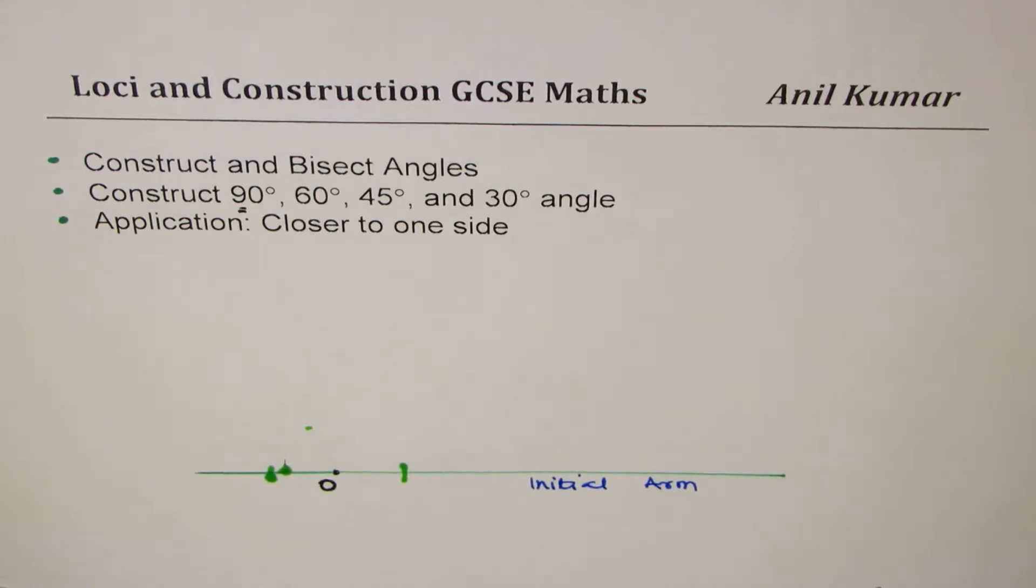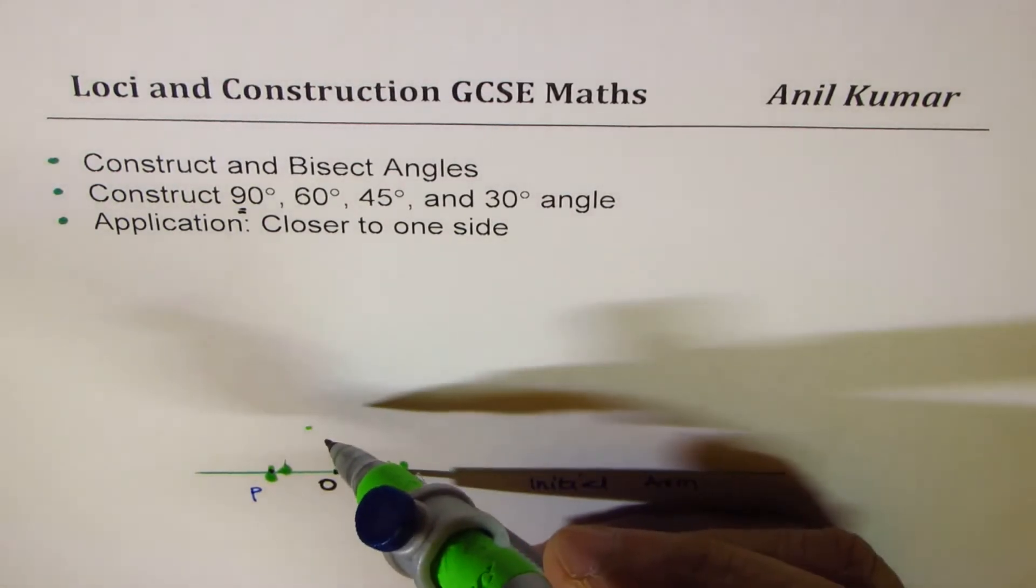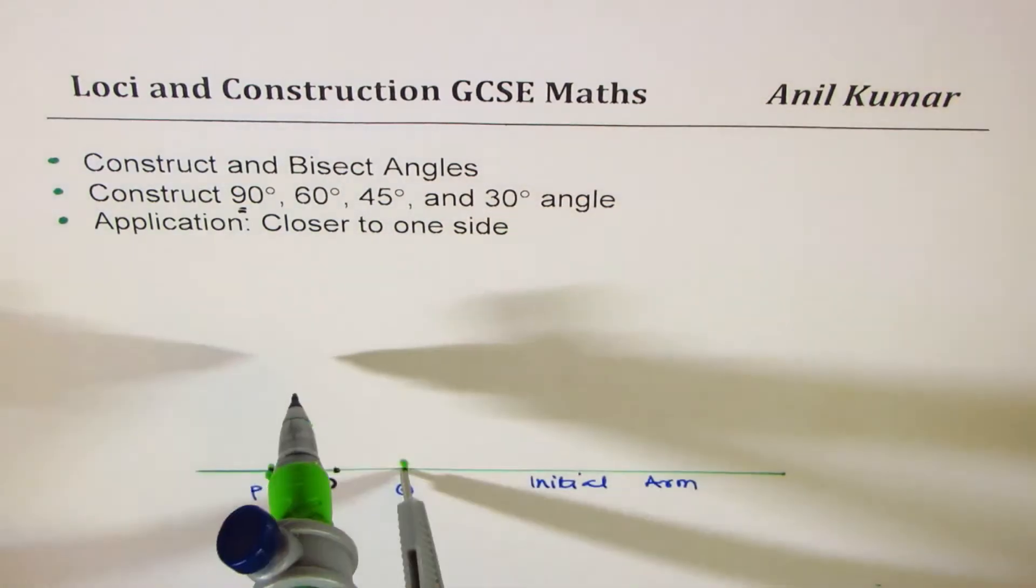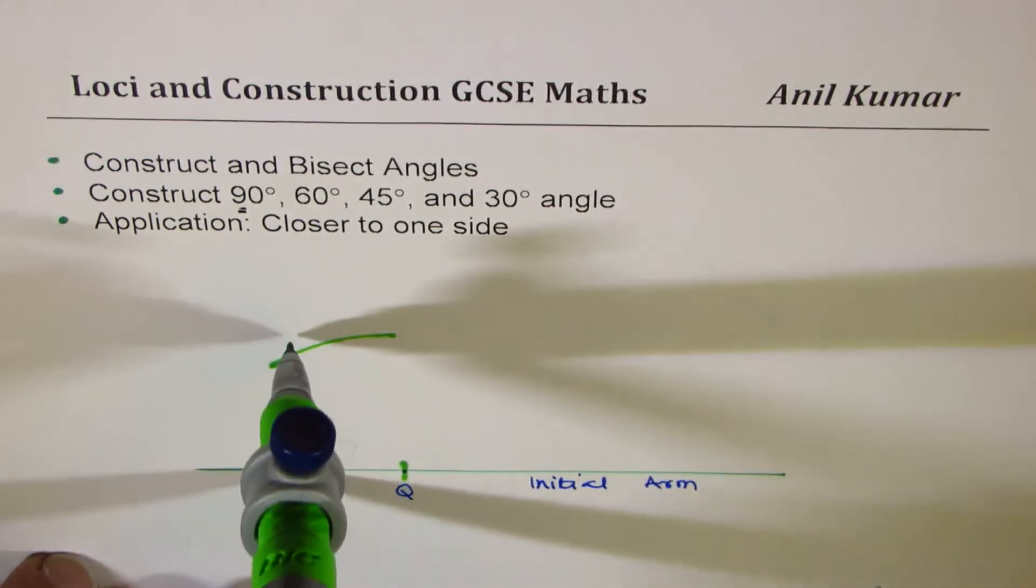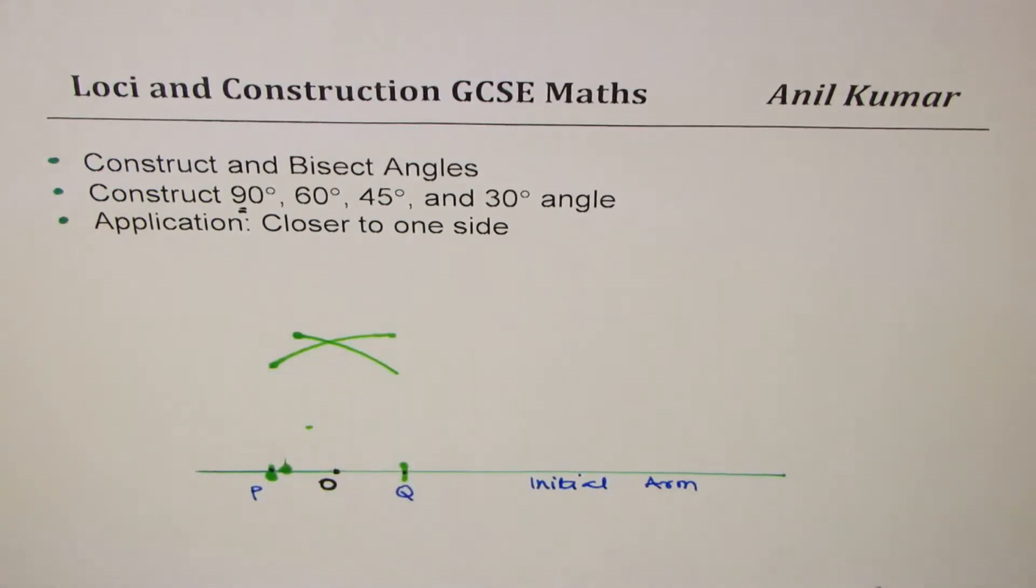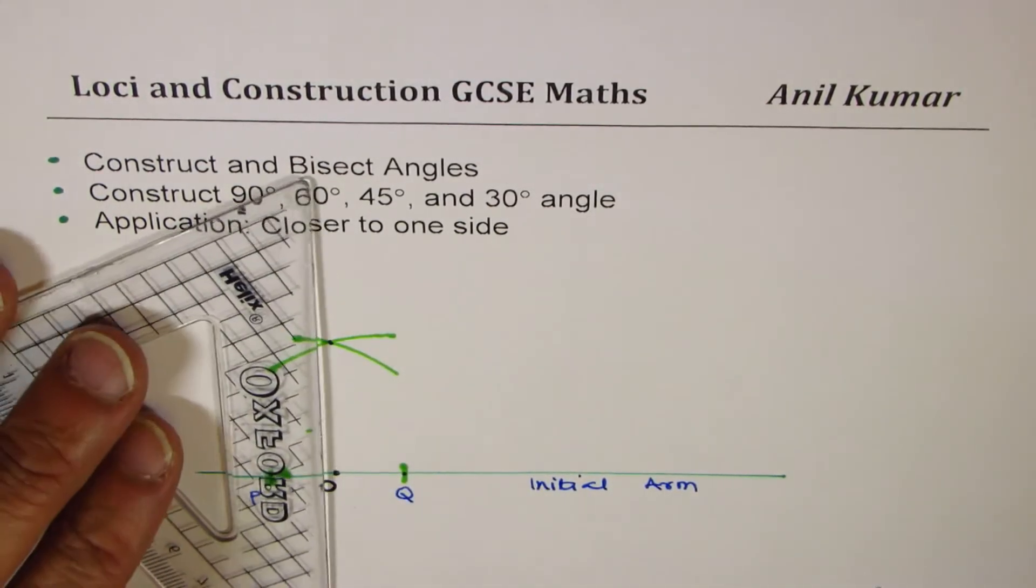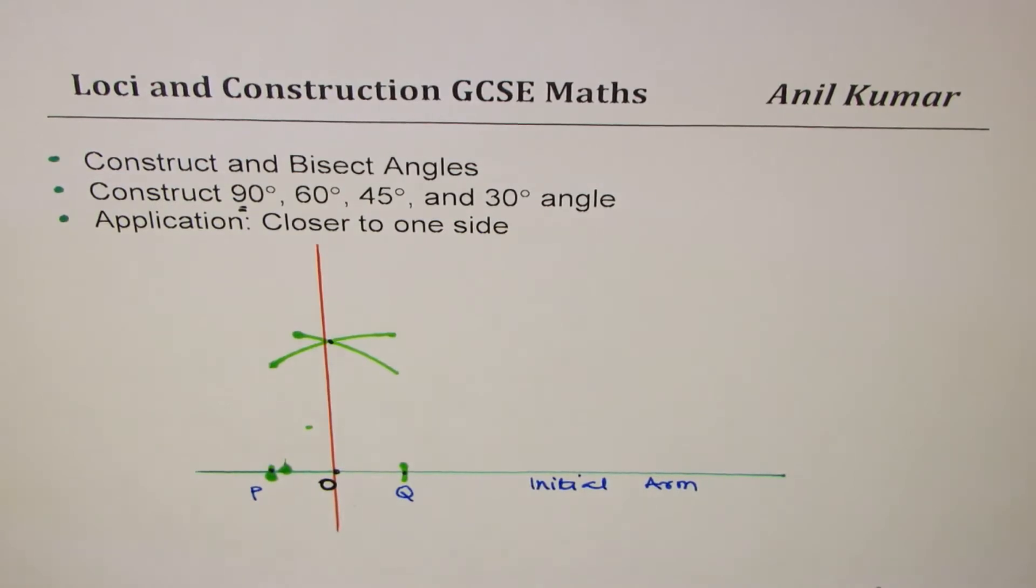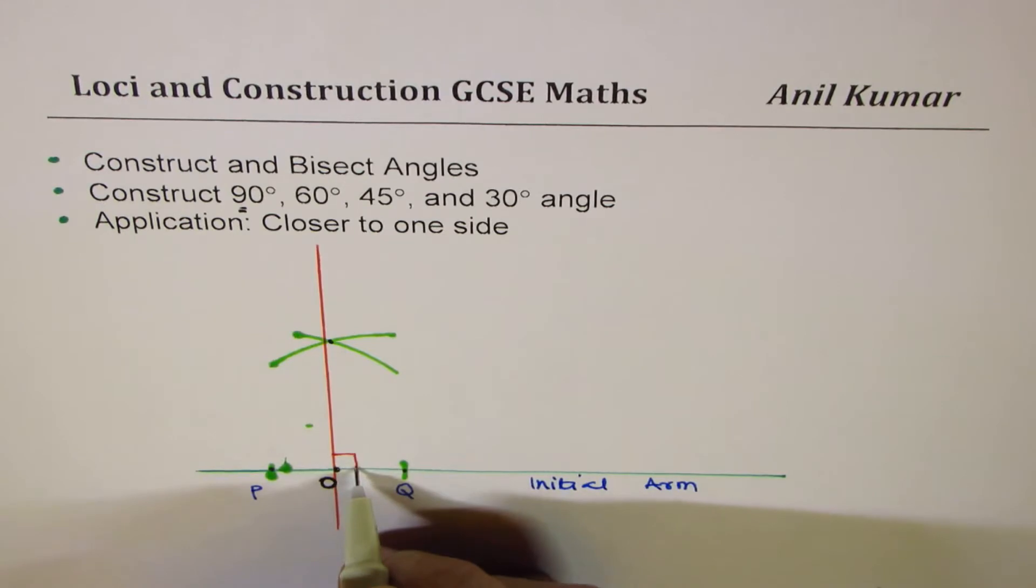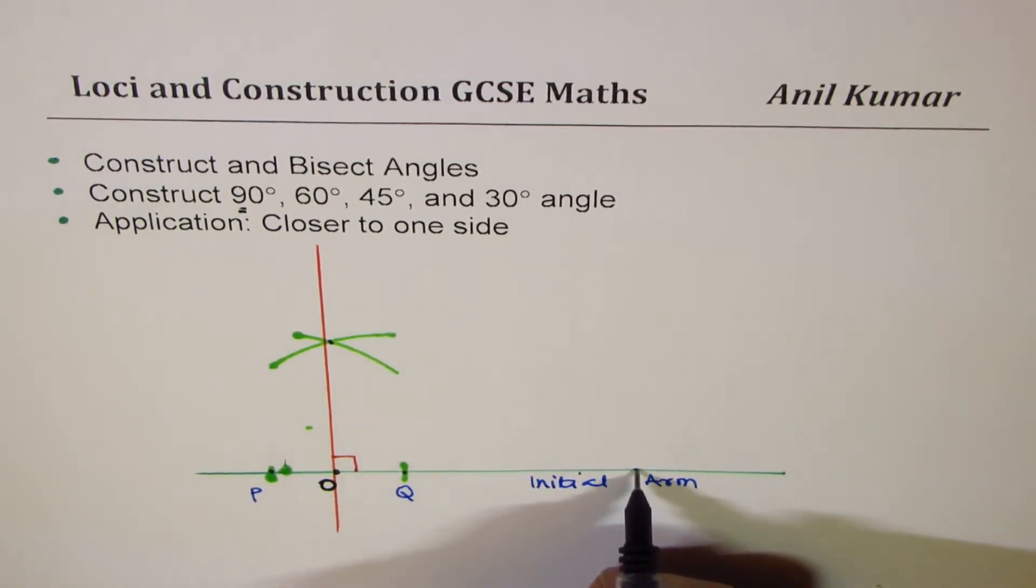We just mark it on the line, two points. The points are, let us say, P and Q. Now we have to place the compass at these points. The length should be longer than before, so we have increased the length. And then we mark arcs above O. We're expecting 90 degrees right above O. So we get this. Once you cut it across, you get a point. Join this point with O.